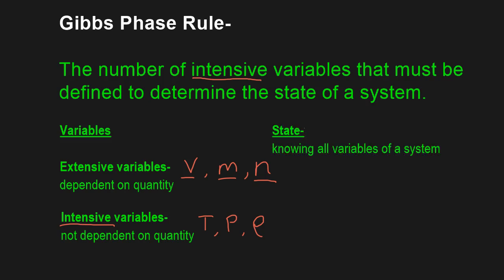The next thing we should look at is: what is a state? Well, a state is knowing all the variables of a system — its volume, its mass, the number of moles, the temperature, the pressure, the density, etc. So that's the state.